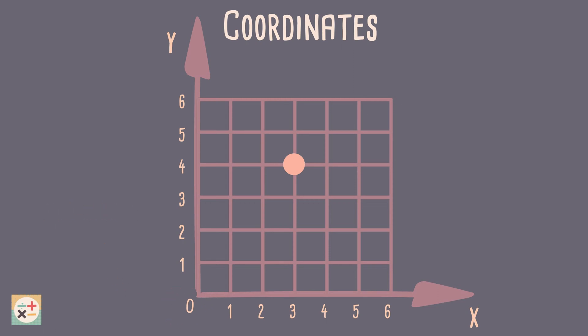We use the graph to measure how far along and how far up the point is. For example, this coordinate is 3 units along horizontally, and 4 units up vertically.